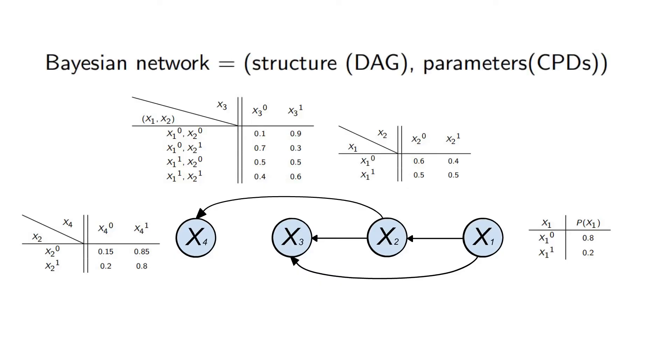So in essence, a Bayesian network is nothing but a visualization of the factorization of a joint distribution.